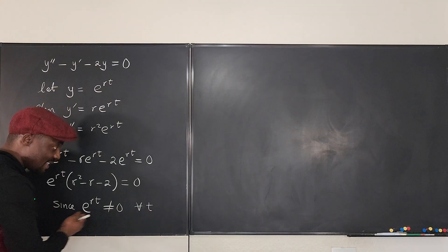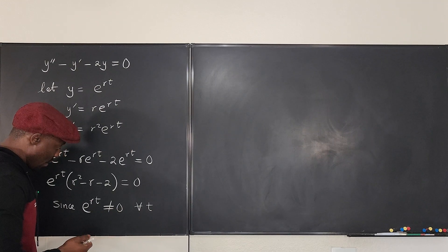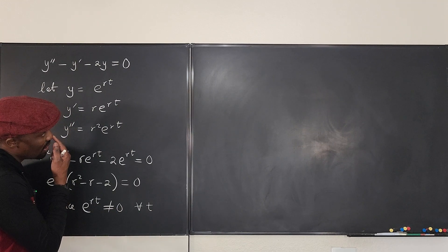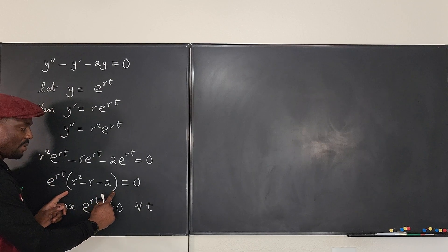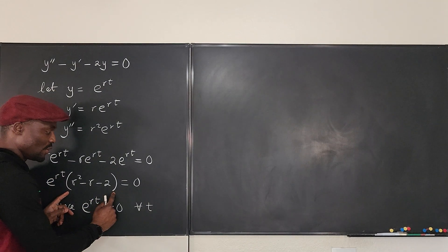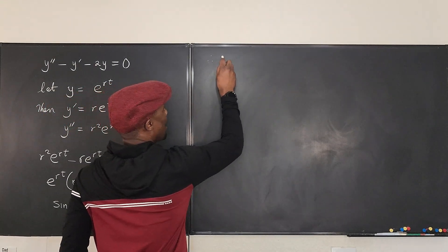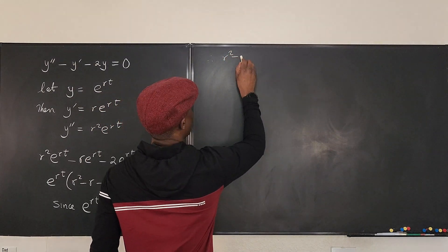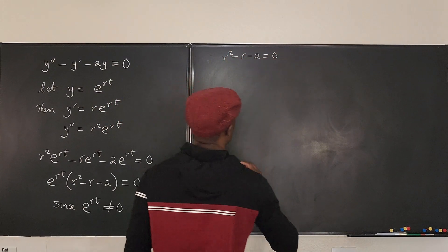And therefore, we know since e^(rt) is not equal to zero for all t, it doesn't matter what t is. So if that's the case, we can say that only this part is going to be equal to zero.